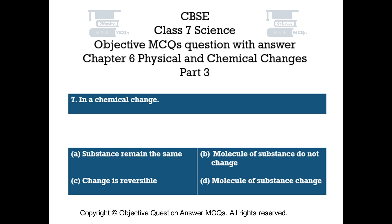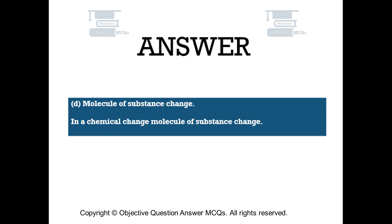Question number 7. In a chemical change: Option A substance remains the same, Option B molecules of substance do not change, Option C change is reversible, Option D molecules of substance change. The right answer is Option D — molecules of substance change. In a chemical change, molecules of substance change.